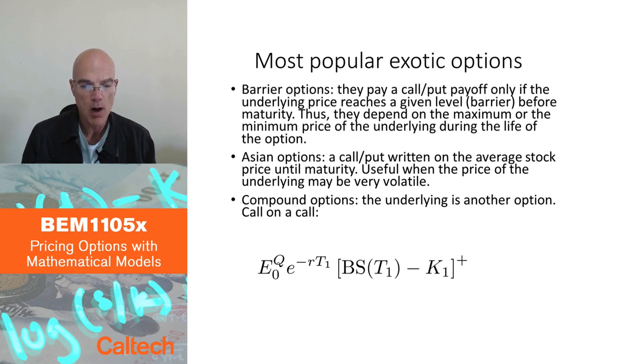The most popular exotic options are barrier options, probably. These are options which are like call and put options, but they pay only if the price on the underlying reaches a certain level, a certain barrier before maturity, or sometimes they don't pay if it reaches that level before maturity. So they depend on whether a maximum or a minimum of the stock price during the lifetime of the option has gone below or above a certain barrier.